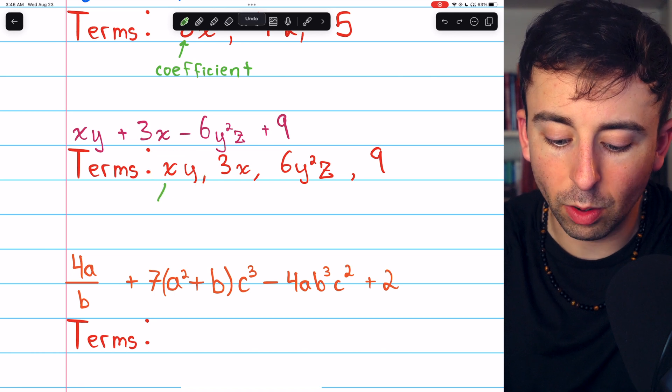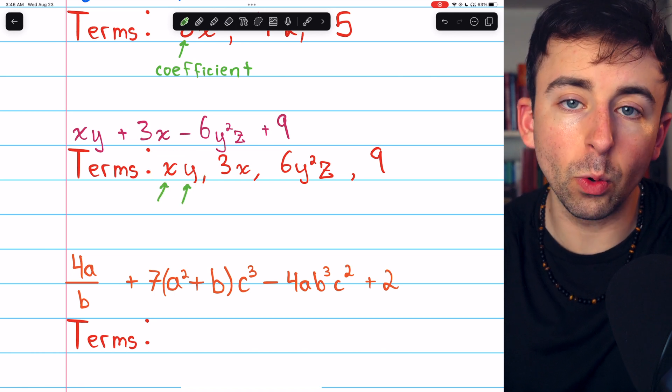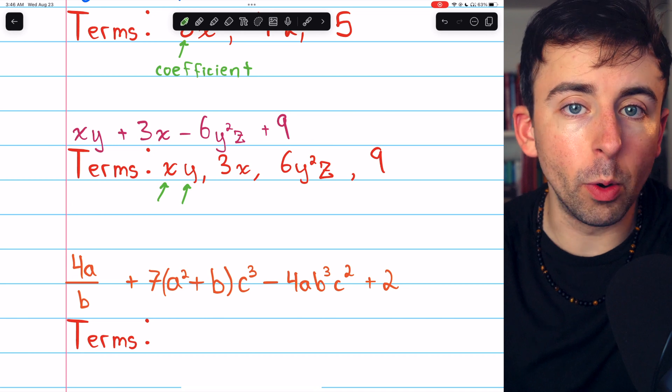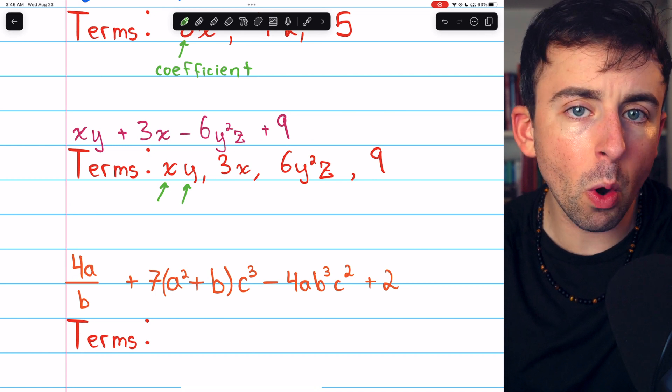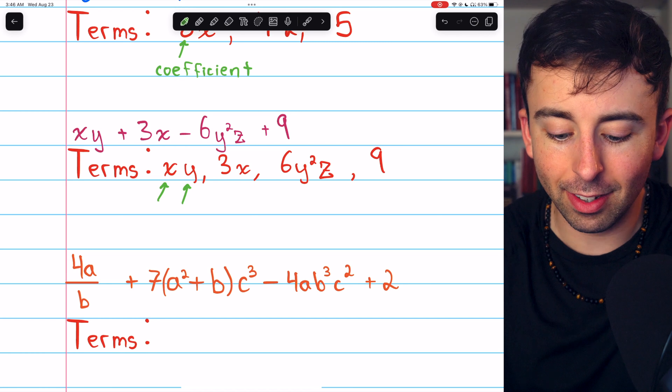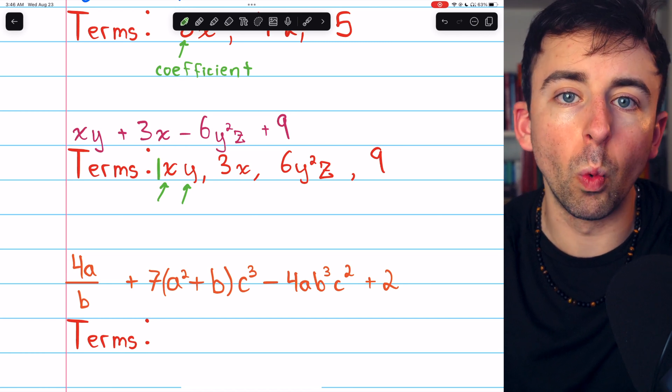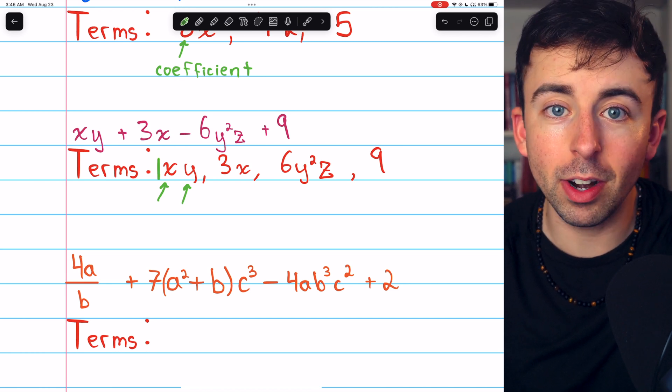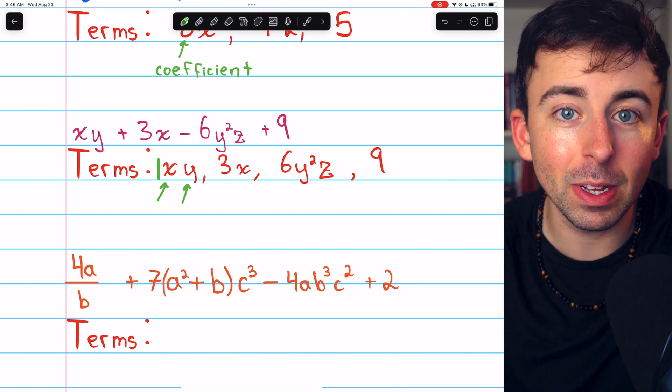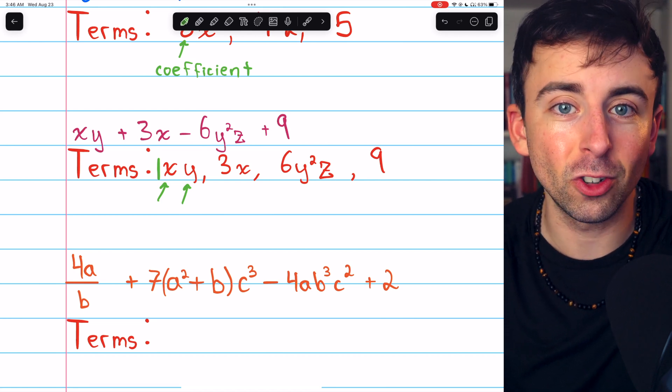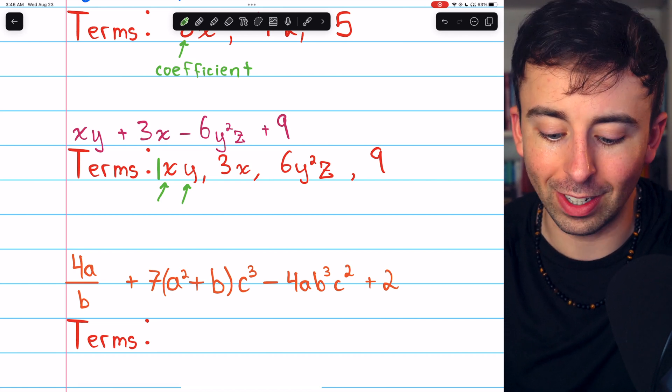The factors of xy are x and y. You might wonder what the coefficient of this term is. There's not a coefficient written. And in this case, the implied coefficient is 1. If we put a 1 in front of it, that doesn't change anything because multiplying by 1 doesn't change anything. So that's the coefficient in this case.